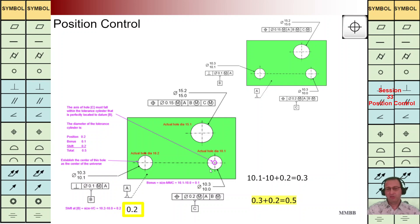For the second small hole: if the diameter of the actual hole is 10.1, then 10.1 minus 10 means we are going to have this tolerance, and the total tz will be 0.3. But if the first small hole is exactly at the center, we are going to have 0.2 as a shifting. It means the center of this small hole on the right hand side can be located in a cylinder with the diameter of 0.5, because we have this possibility for shifting.